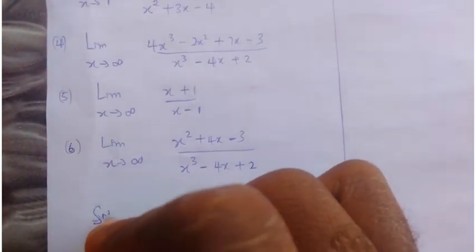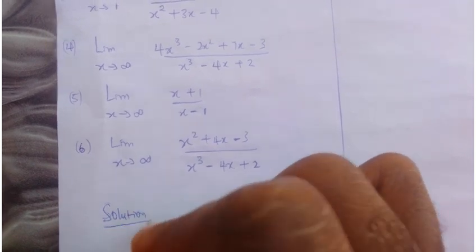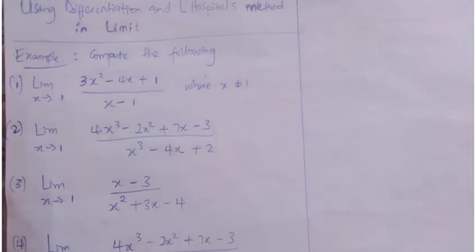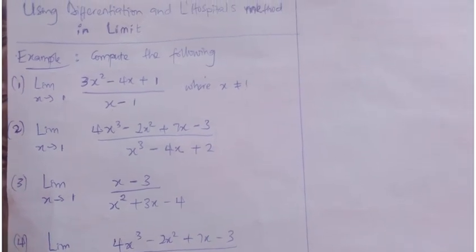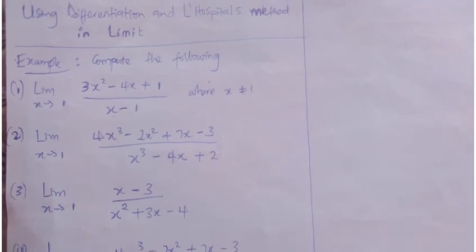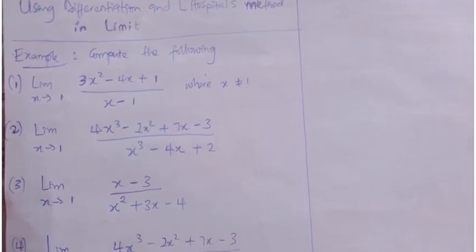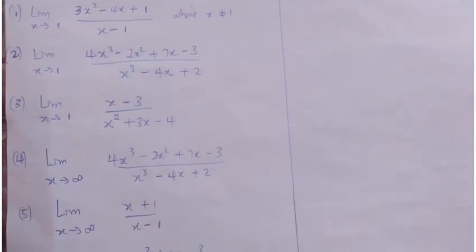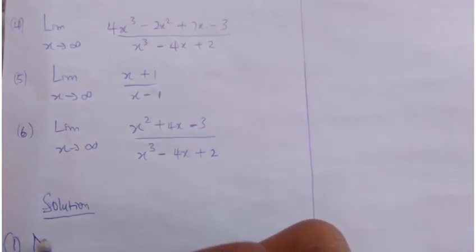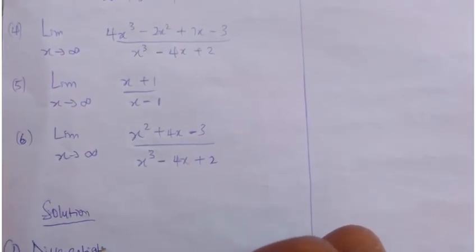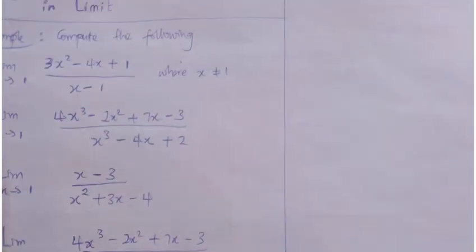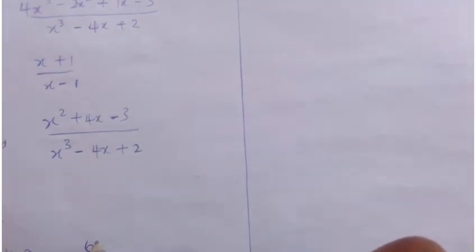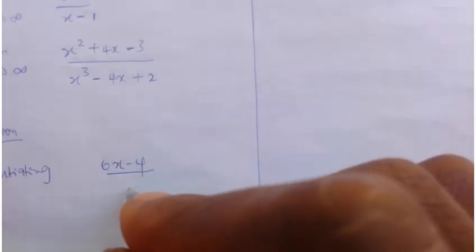Solution. For question number one, using differentiation means you differentiate both your numerator and denominator, after which you substitute your x value into the remaining equation. Differentiating the numerator gives us 6x minus 4, and the denominator gives us 1 over 1.